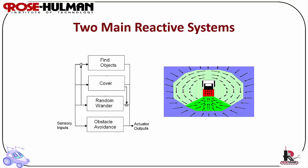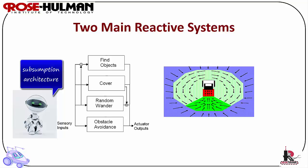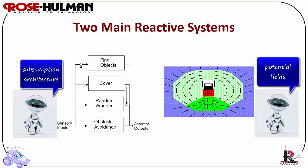There are two main reactive systems: subsumption architecture, which is layers of behaviors and their control relationships, and the potential fields method as another example of schema theory where concurrent behaviors with a perceptual and a motor schema work to navigate. Both of these systems are equivalent in power, and sometimes there is a mixture of the layers and the concurrency for a reactive system.